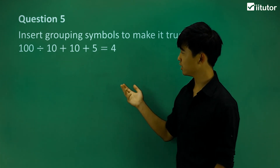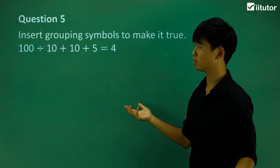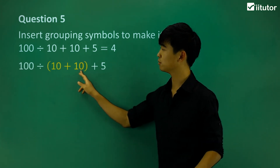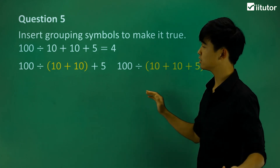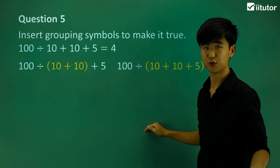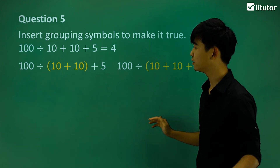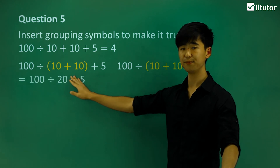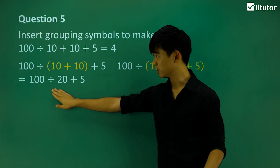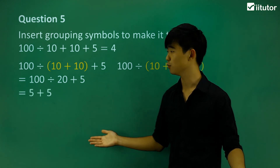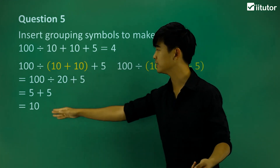Now let's take a look at this question. We have 4 terms and we're going to try to make this statement true by inserting grouping symbols somewhere. Let's consider some cases: putting brackets around here, and also putting brackets around all of this. Let's calculate to see which of these equals 4. So 10 plus 10 is 20, and from our order of operations we do division first: 100 divided by 20 is 5, and 5 plus 5 equals 10. That's not the 4 we want, so these are wrong.